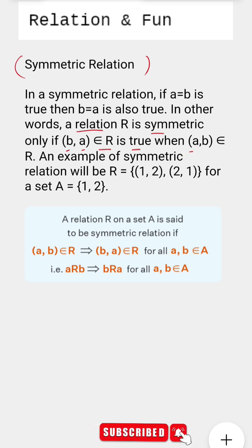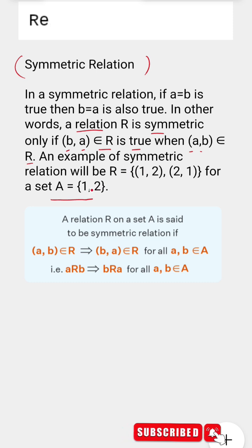Now let us try to understand the same with the help of an example. If we have a set that contains two elements 1 comma 2, then the relation which will be formed on the base of this particular set will have two ordered pairs, that is 1 comma 2 and 2 comma 1.